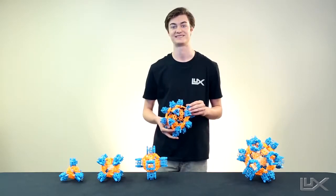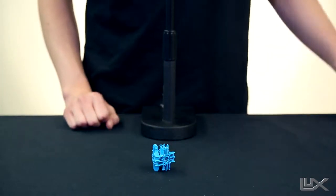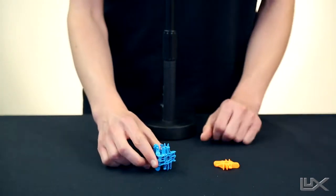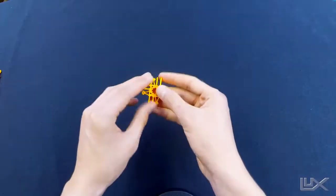Alright, let's get started. So the first thing you're going to need in making the dodecahedron are 20 triangular prisms and 30 of your squares.